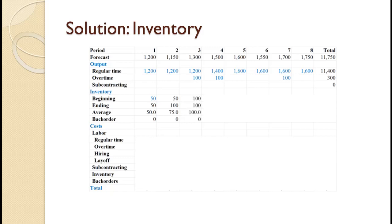For period three, the forecast is 1300 and total production is 1300, so inventory remains at 100 with no back orders, giving an average inventory of 100. For period four, the forecast is 1500 and total production is 1500, so inventory remains at 100 with no back orders, giving an average inventory of 100. For period five, the forecast is 1600 and total production is 1600, so inventory remains at 100 with no back orders, giving an average inventory of 100.